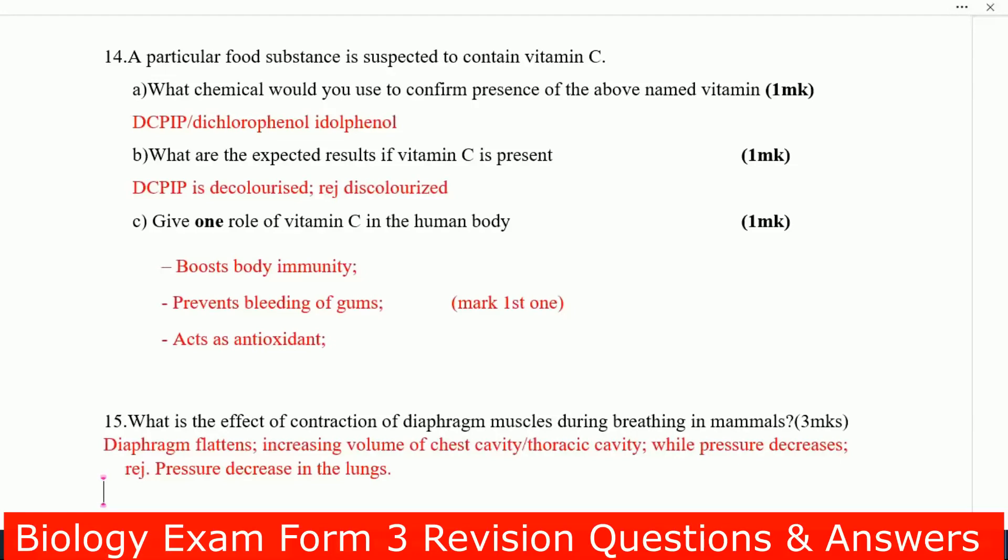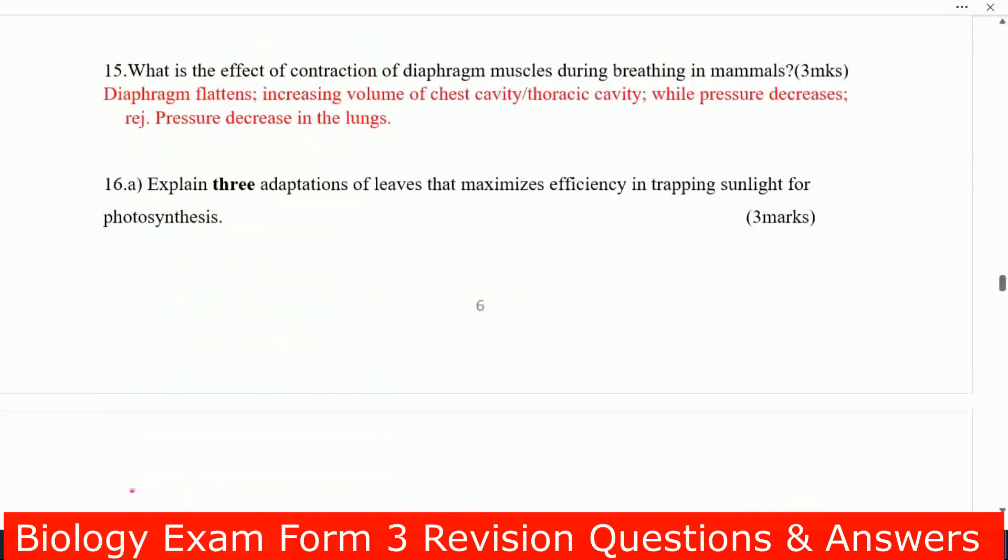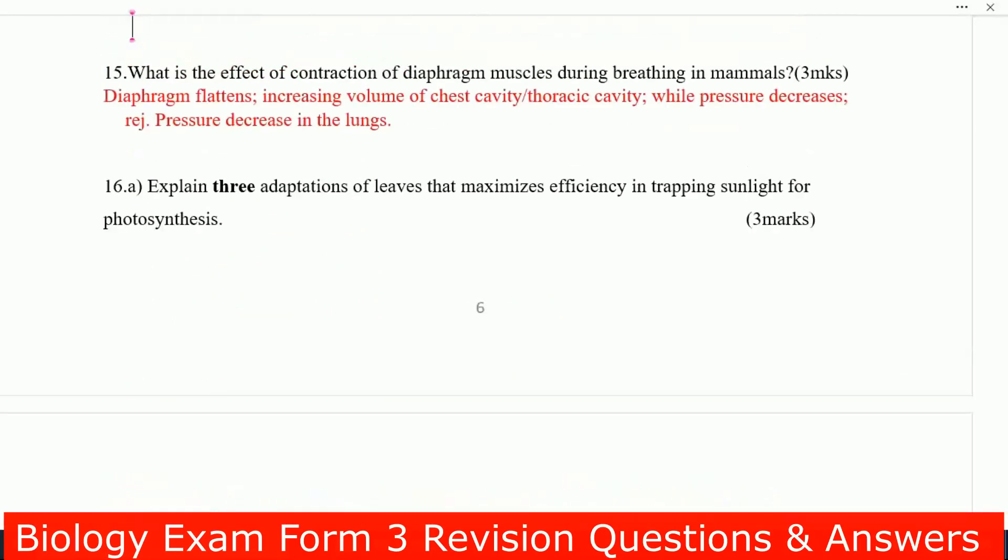Number 15, what is the effect of contraction of diaphragm muscle during breathing in mammals? Diaphragm flattens, increases volume of chest cavity or thoracic cavity, while pressure decreases.